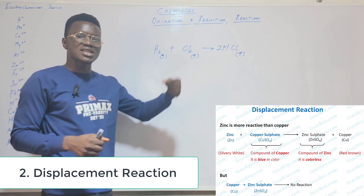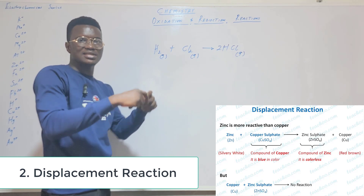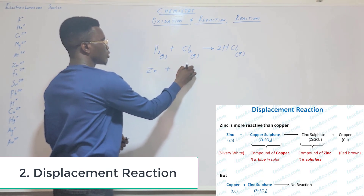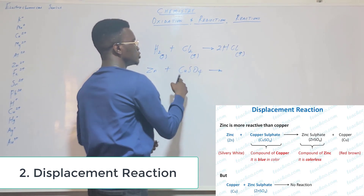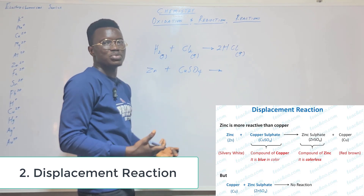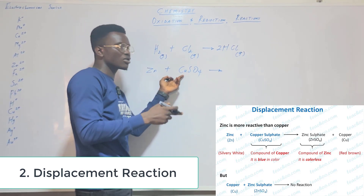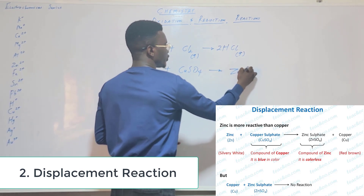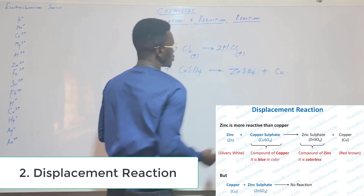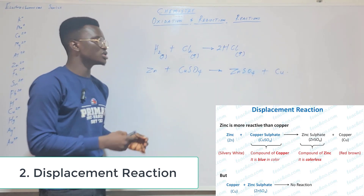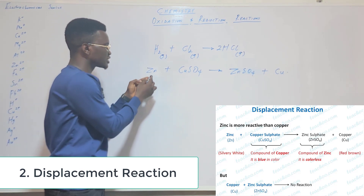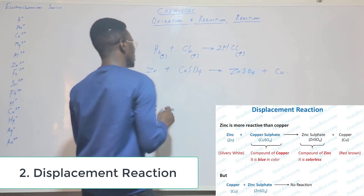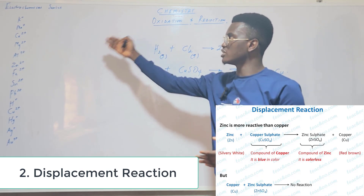Another type of reaction is displacement reaction, which happens when one substance displaces or sends away another substance from its salt. For example, zinc reacting with copper sulfate: the blue solution of copper sulfate gradually disappears as zinc displaces copper, giving zinc sulfate plus copper. This is called a displacement reaction because zinc was able to displace copper from its salt.